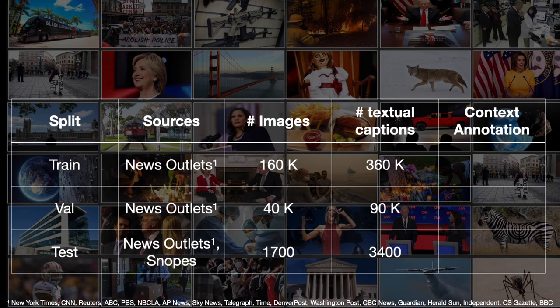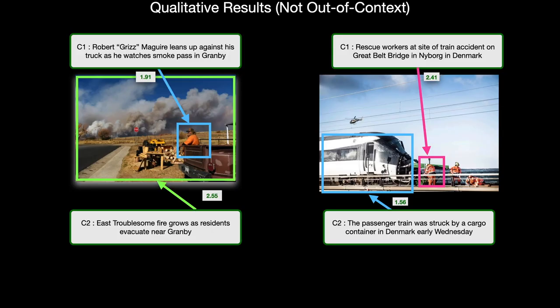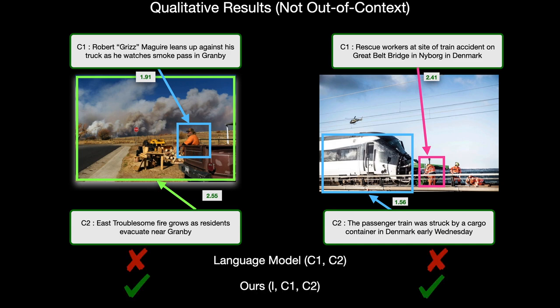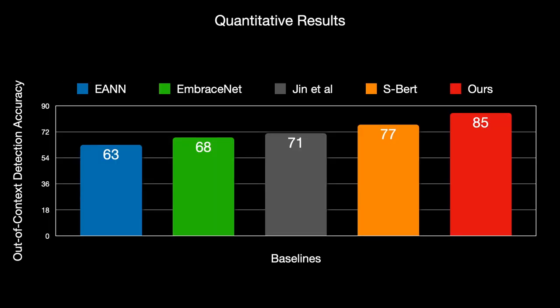For our test set, we use a set of images with two captions each, which we manually annotate with out-of-context labels to evaluate our model. Here, we see some results. Scores indicate object-caption grounding learned by the model. Note that only comparing captions incorrectly classifies predictions as out-of-context when captions are about different objects. In the end, our method outperforms language baselines and other rumor and fake news detection methods.